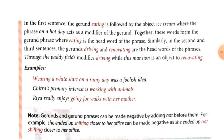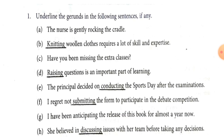Gerund and gerund phrases can be made negative by adding not before them. For example: She ended up shifting closer to her office can be made negative as: She ended up not shifting closer to her office. Now, students, we are going to do Exercise 1: Underline the gerund in the following sentences, if any. It is not necessary that all sentences contain a gerund. In the first sentence: The nurse is gently rocking the cradle — here, rocking is not a gerund; it is the main verb, a finite verb.